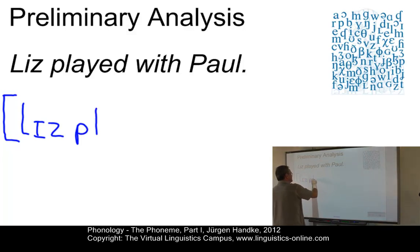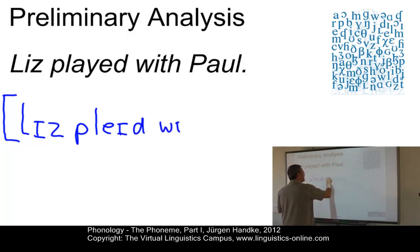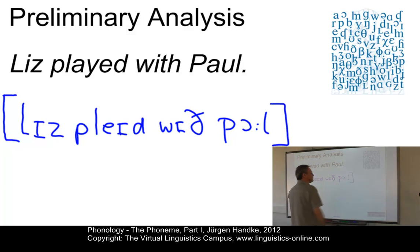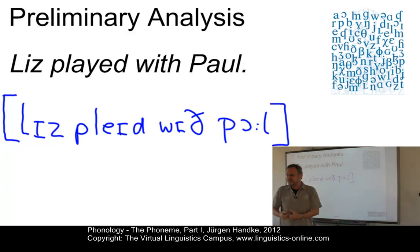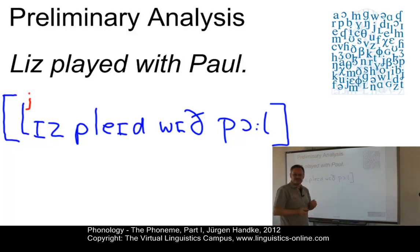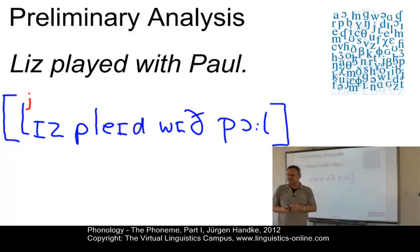So here is the narrow phonetic transcription of 'Liz played with Paul.' In a narrow phonetic transcription, I have to add diacritics to mark all phonetic details that are relevant. For example, we know that the alveolar lateral consonant in 'Liz' is slightly palatalized. The diacritic for palatalization is a superscript J.